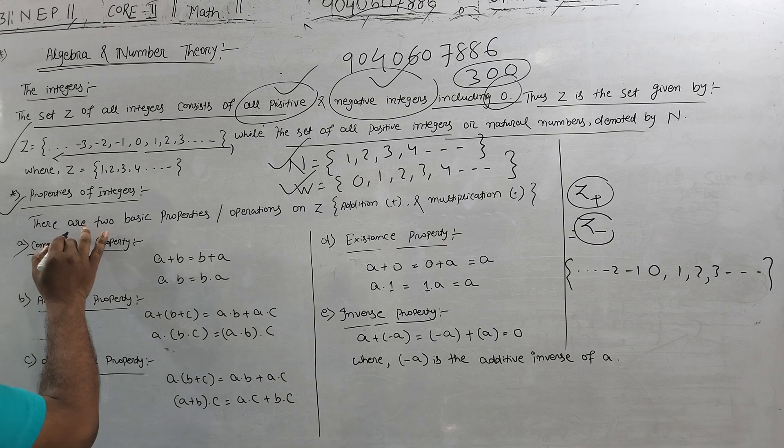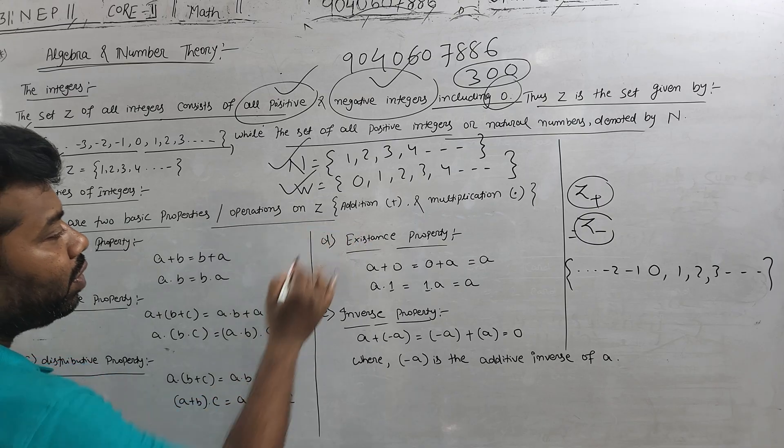Z plus means positive integer, Z minus means negative integer. Integer means the combination of it consists of all positive number, all negative number including 0. So there are two basic properties or operations on addition multiplication.